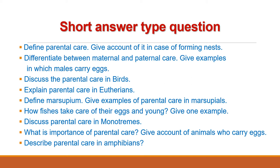The second category of questions are short answer type. First question: Define parental care and give an account of it in the case of forming nests. Next: Differentiate between maternal and paternal care, and give examples in which the male carries eggs.